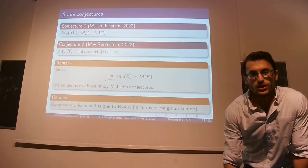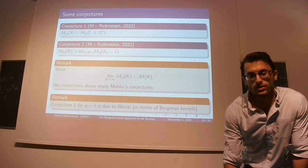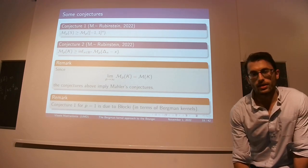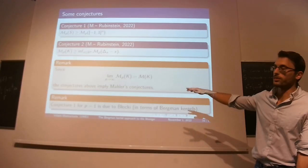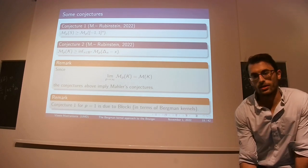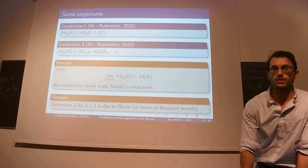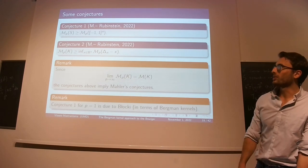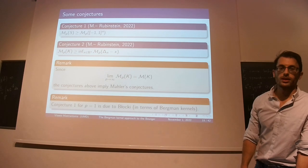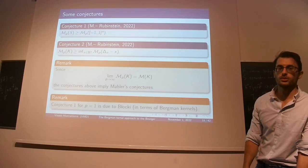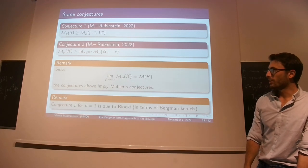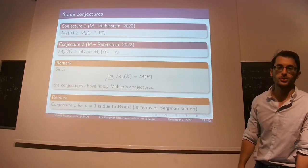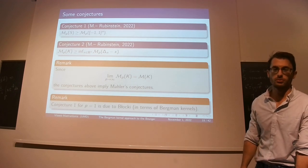We can make conjectures: for symmetric bodies, those M_p are minimized by the cube, and in general they're minimized by the simplex. By the previous lemma, if those conjectures are true, they imply Mahler's conjecture, because if they're true for all p we can take p to infinity. This may be easier because there is only one conjectured minimizer, namely the cube — people say maybe the existence of multiple minimizers makes the problem harder. The first conjecture for p equals 1 was also conjectured by Professor Wójcicki in terms of Bergman kernels in a previous paper.